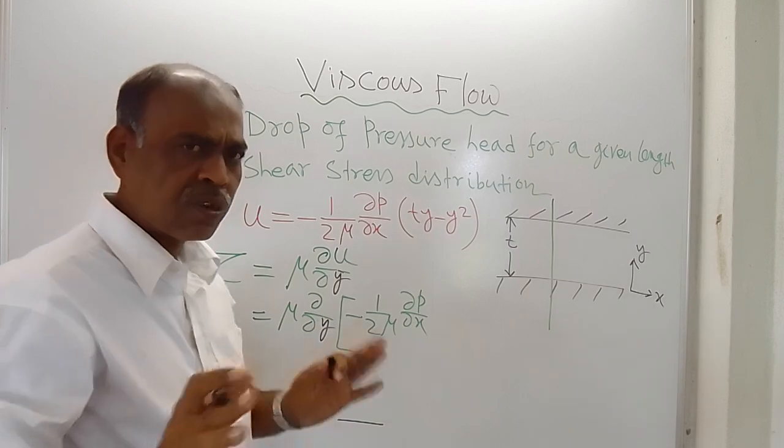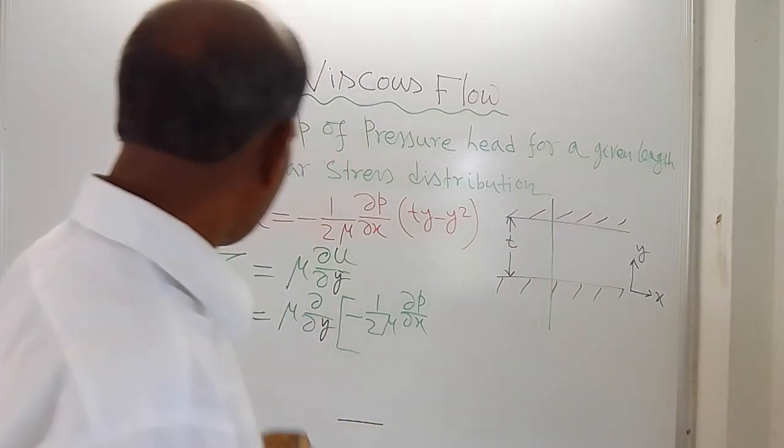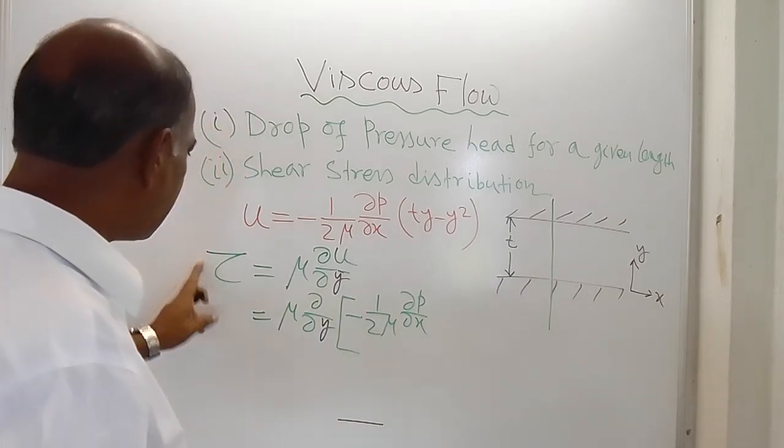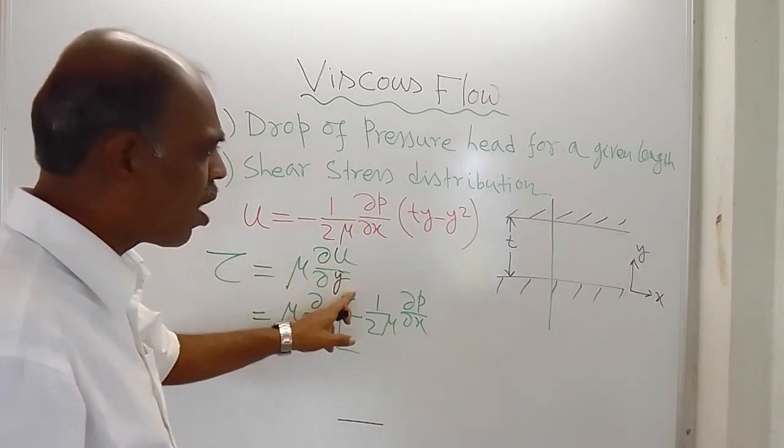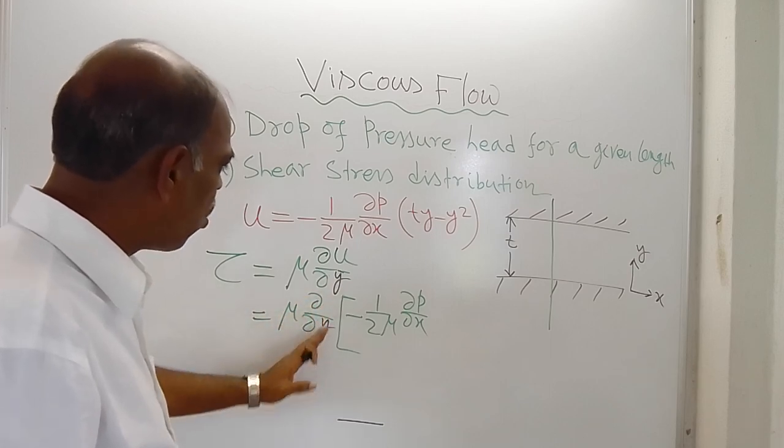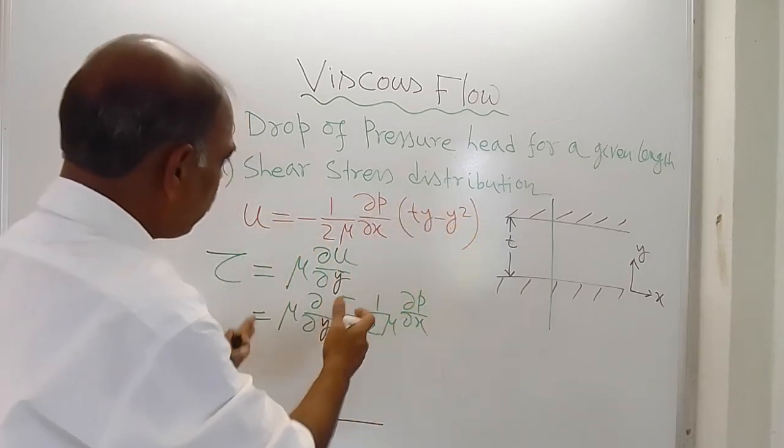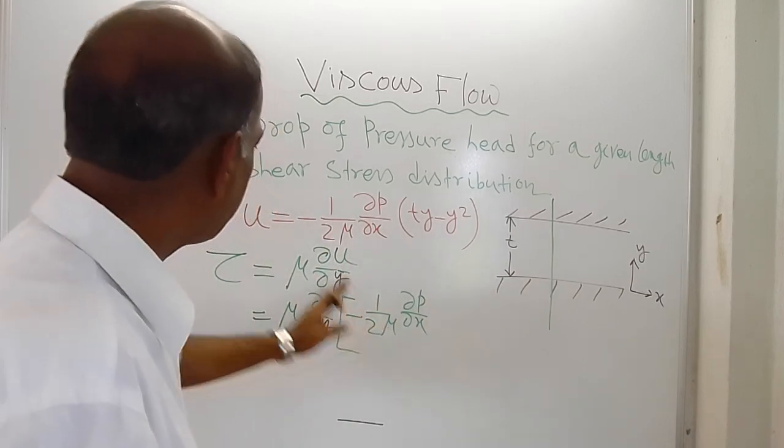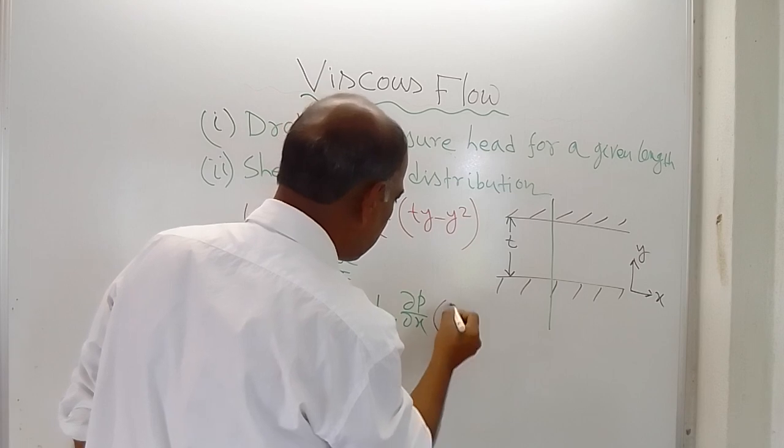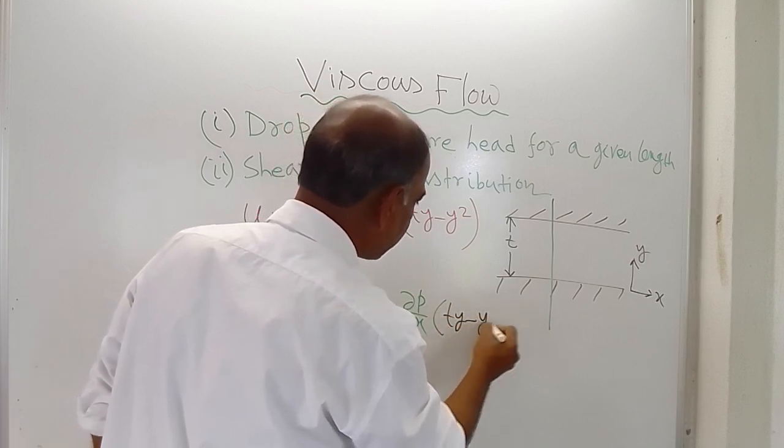Let's start from the very beginning. Shear stress is equal to mu del u del y, then mu del del y of u. U is this much, so you write the expression for u here: minus one by two mu del p del x, then ty minus y squared.